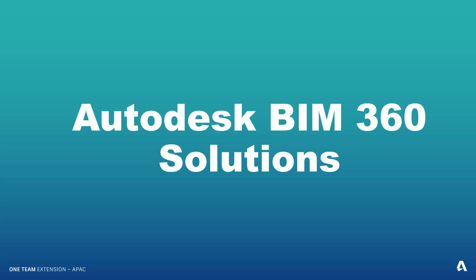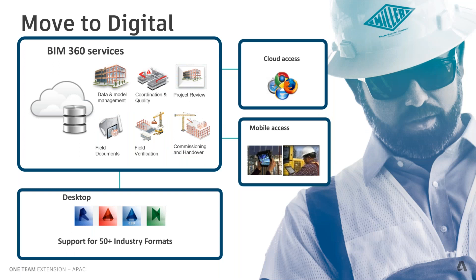For those completely new to BIM 360, the software workflow hasn't changed. You still use AutoCAD, Civil 3D, or Revit as normal — the only change is how you save files. Instead of going to C or D drive, you go to BIM 360 and locate the folder structure you've created there. Once the file is uploaded to BIM 360, it becomes accessible to anyone across the globe who has access to that folder.